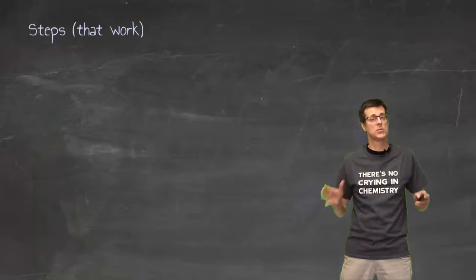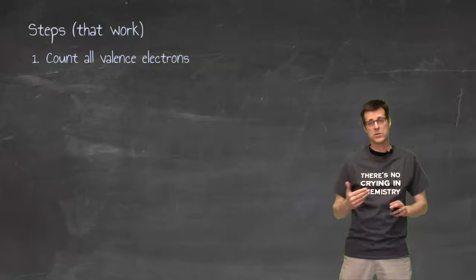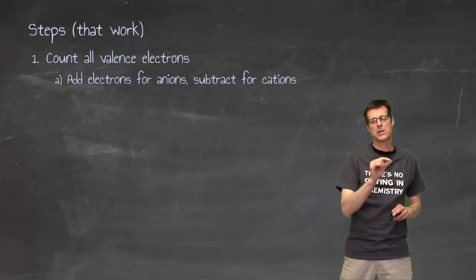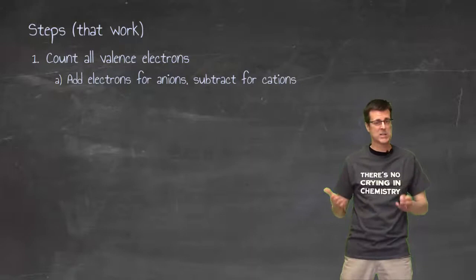So what we need is some steps that do work. There are going to be a few of them, and I strongly encourage you to write these down. You're going to count all the valence electrons. And you're also going to have ions. Ions that have a negative charge, that's an anion, mean we've got more electrons. Ions that are a positive charge, a cation, have lost electrons. So we're going to add and subtract electrons as necessary.